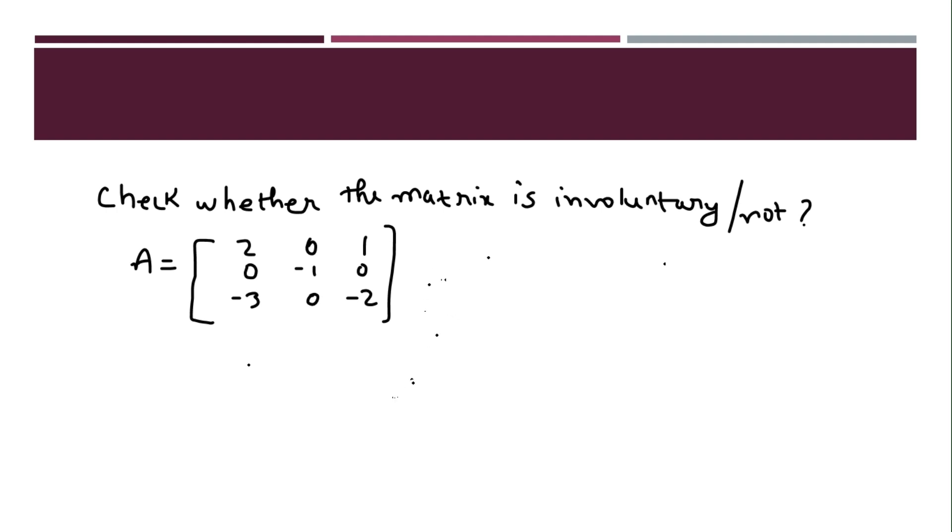This is the matrix and we have to check whether it is involuntary or not. The definition itself says what? That the matrix is equal to its inverse. Now, inverse of 3 by 3 order will take some time. But if it is a short question, A square is I. I think that is an easy path to follow.